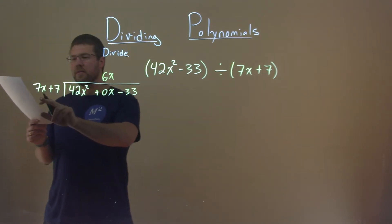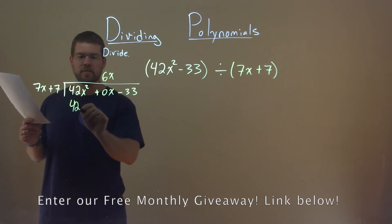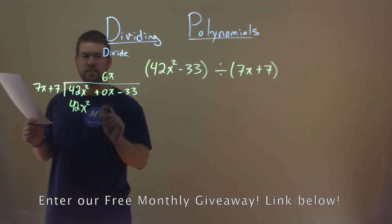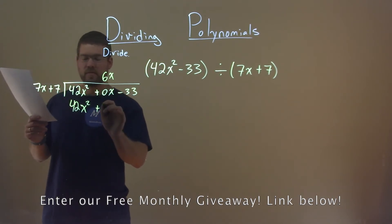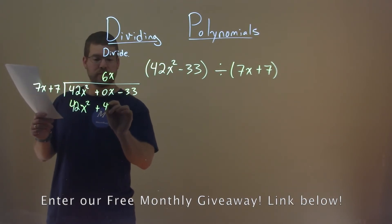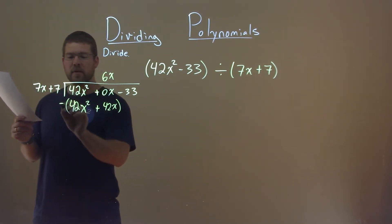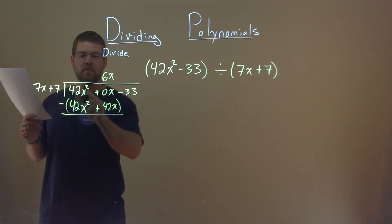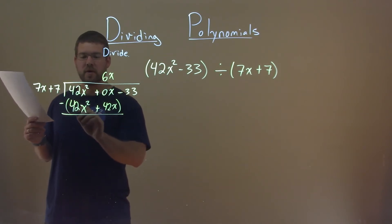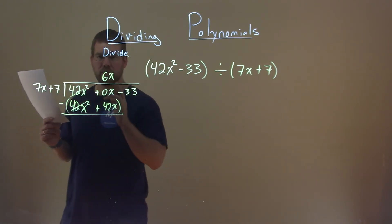6x times 7x is 42x squared. 6x times 7 is 42x. We're now going to take that whole thing, and we're subtracting it. 42x squared minus 42x squared, 0. They cancel. That was the point.